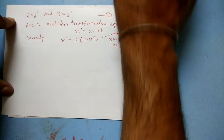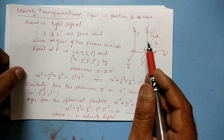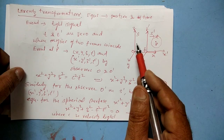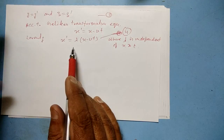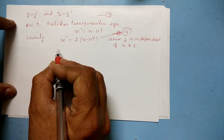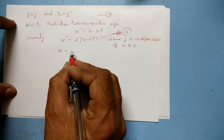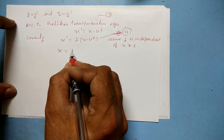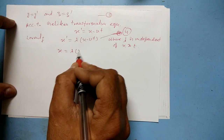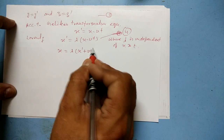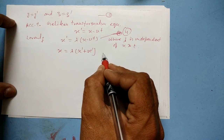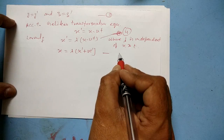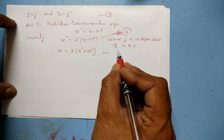If we consider the case that S dash is moving in the negative x direction, then we can rewrite the expression as x equals lambda times (x dash plus v t dash). This is relation 5.